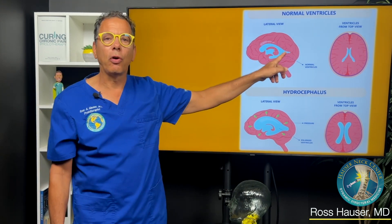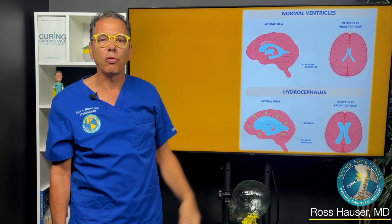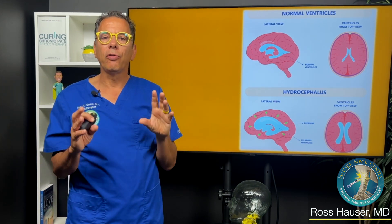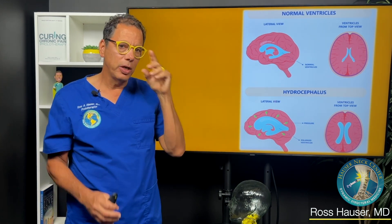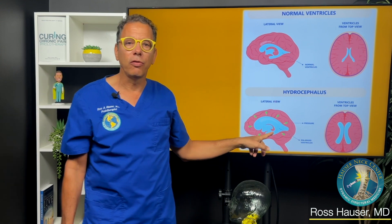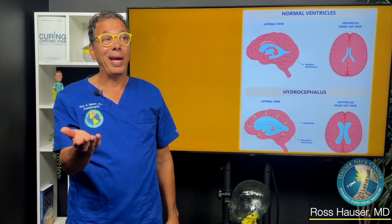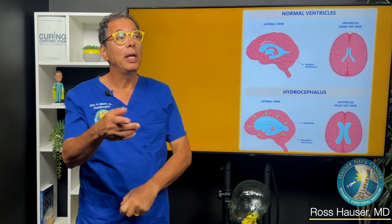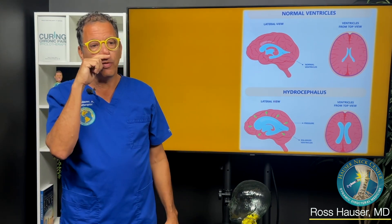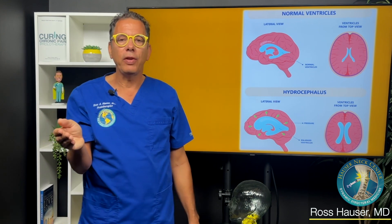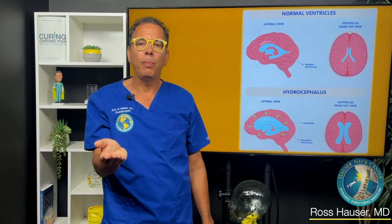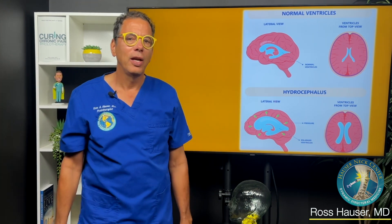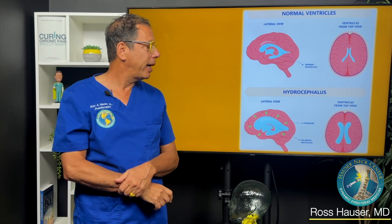On MRI, what you can see is the ventricles, which contain the cerebral spinal fluid. When the ventricles enlarge, that's called hydrocephalus. I used to see this during my residency at Heinz VA Hospital in Maywood, Illinois.